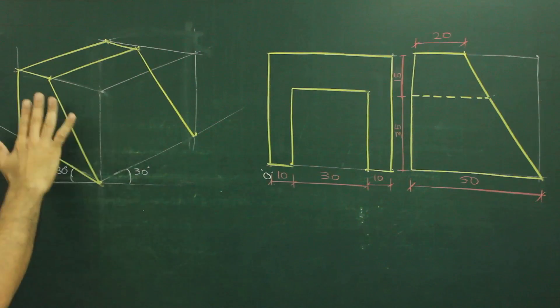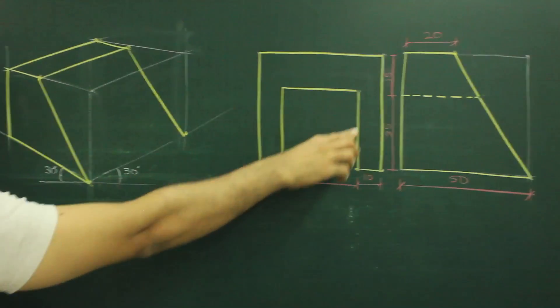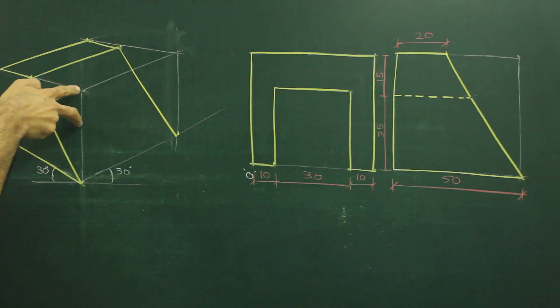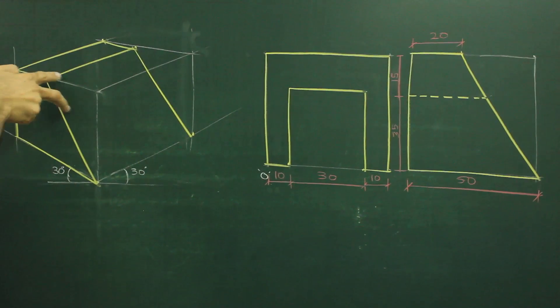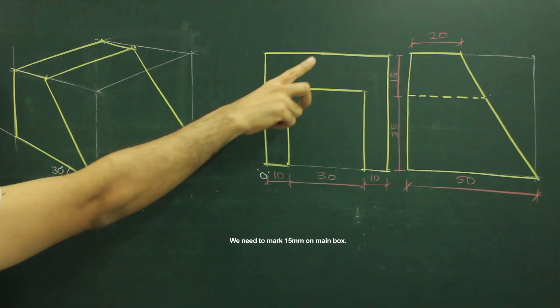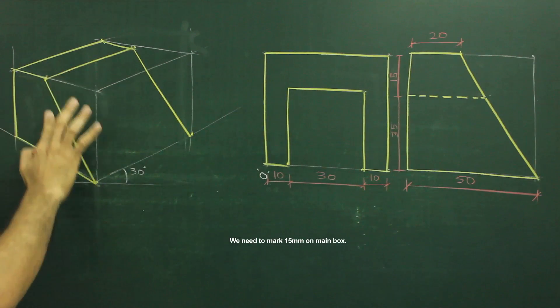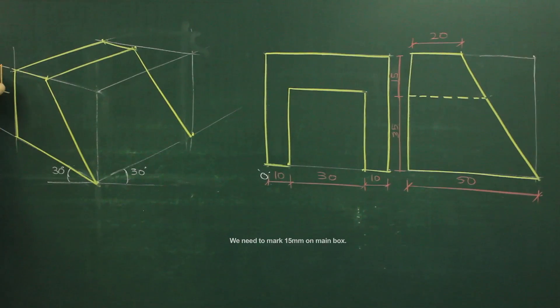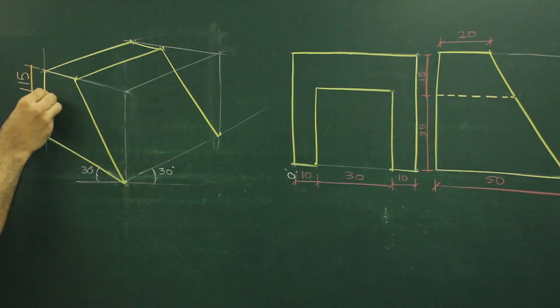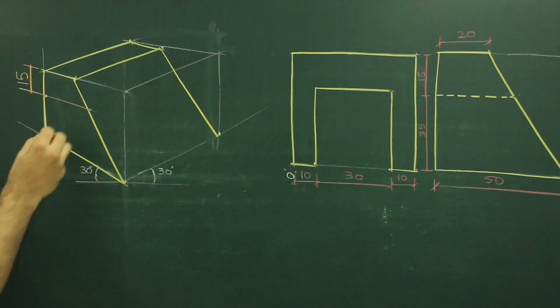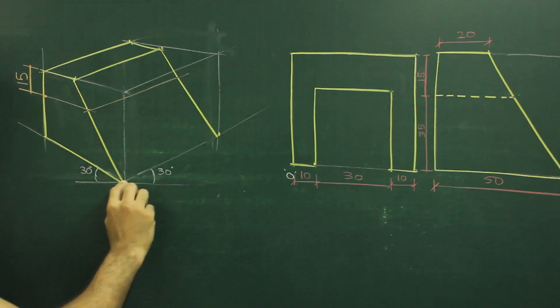Now this part, if you see this height is 15. We can't take it on this surface, because if you see height is straight and this line is inclined. So what we need to do, we need to mark 15 on this. Then you extend that line, wherever it will cut, from there you draw parallel to this line which is at 30 degree.